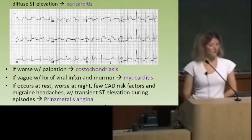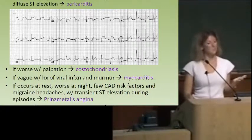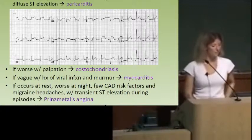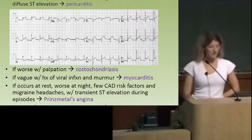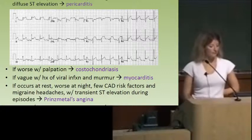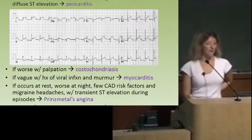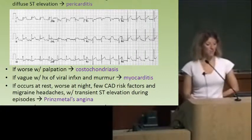Some other causes of chest pain: if the pain is reproducible with palpation, think costochondritis. If it's vague chest pain after a viral infection a few weeks or months ago with a new murmur, myocarditis might be on the differential. If the pain occurs at rest, worse at night, usually in a lady who also has migraines, think Prinzmetal angina — characteristically worse early in the morning. The test to diagnose it is ergonovine stimulation, and treatment is calcium channel blockers and nitrates.